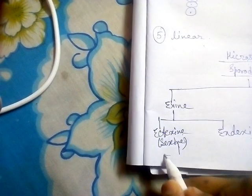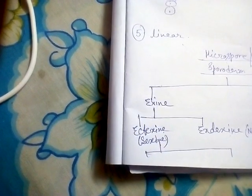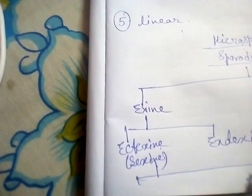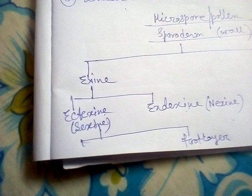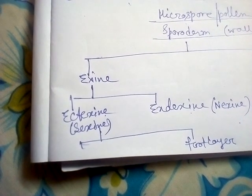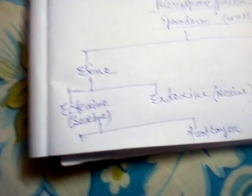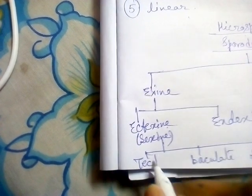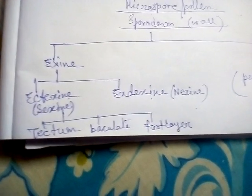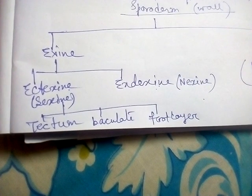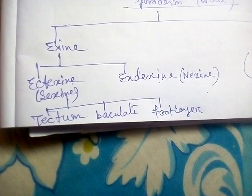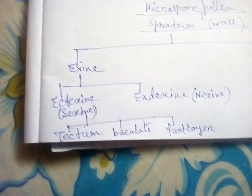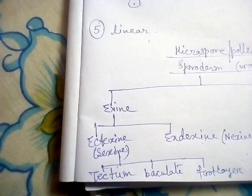Ectexine can be further classified into three parts. The innermost layer of ectexine is known as the foot layer. The middle layer of ectexine is known as the vacuolate layer. The outermost layer is known as tectum. So exine is classified into ectexine (or sexine) and endexine (or nexine), and ectexine is divided into foot layer, vacuolate layer, and tectum. In the tectum layer, various sculpturings are present.